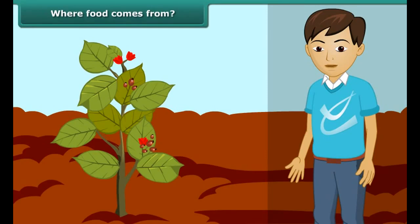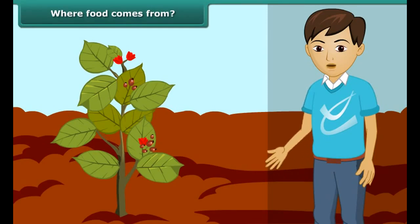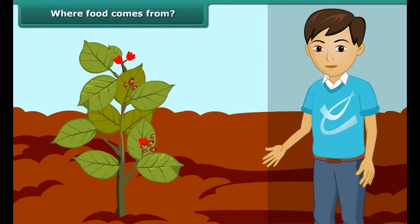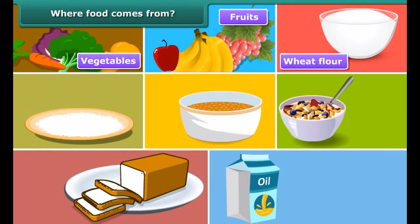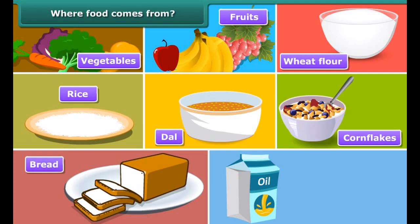Let us now discuss where we get the various food items to eat. Most of the food we get from plants — like vegetables, fruits, wheat flour, rice, dal, corn flakes, bread, vegetable oil, etc.